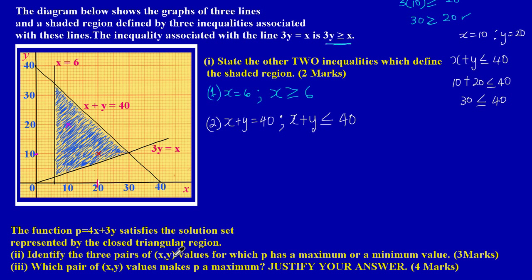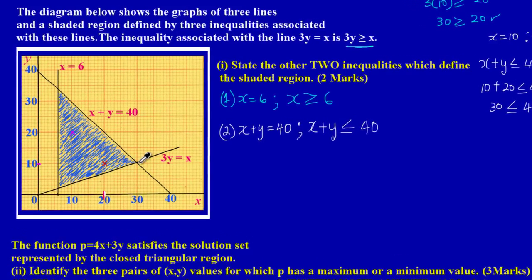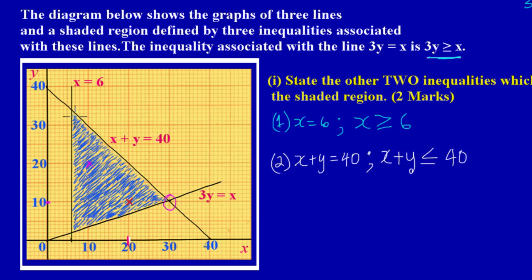In part 2, they're asking us to identify the three pairs of x and y values for which p has a maximum or minimum value — that's an easy three marks. Basically, they're asking us to state the three vertices of the shaded triangular region. These three corners bound the shaded region, so we simply write down the coordinates — the x and y values — for those points.